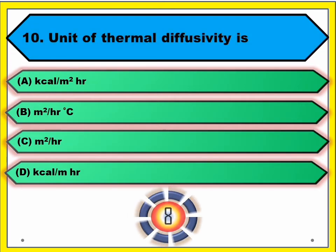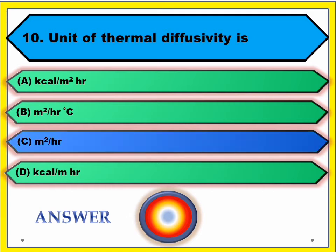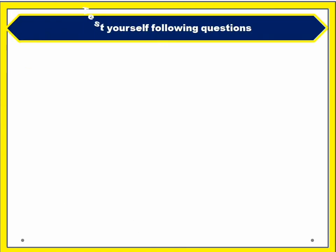Question number ten: unit of thermal diffusivity alpha is — answer: m² per hour or m² per second.